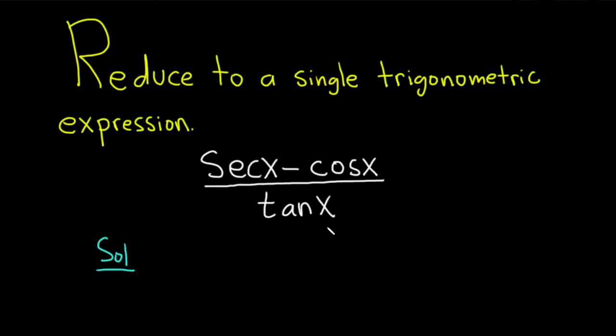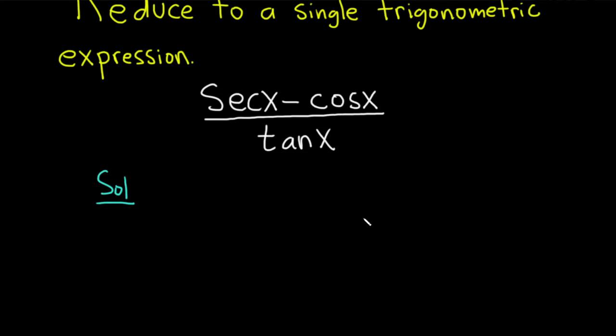One way to do this is to write everything in terms of sine and cosine. Secant is 1 over cosine, so instead of secant I'll write 1 over cosine x minus, and then here we just have cosine.